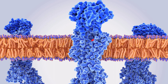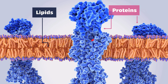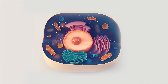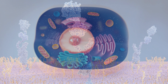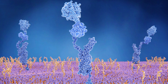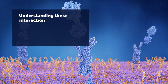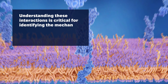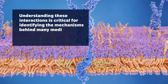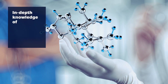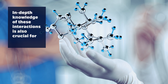The two fundamental components of cell membranes are proteins and lipids, which form a diverse and complex system connecting the membrane to the wider cell. Interactions between cell membrane proteins and between proteins and lipids play vital roles in myriad biological processes. Understanding these interactions is critical for identifying the mechanisms behind many medical disorders in order to find ways of treating them. In-depth knowledge of these interactions is also crucial for drug design.